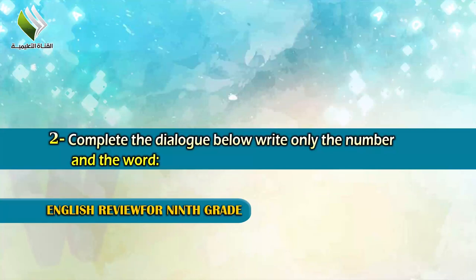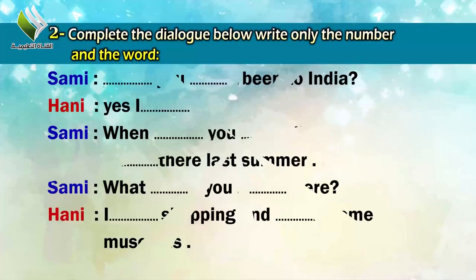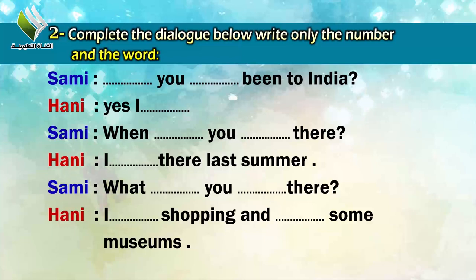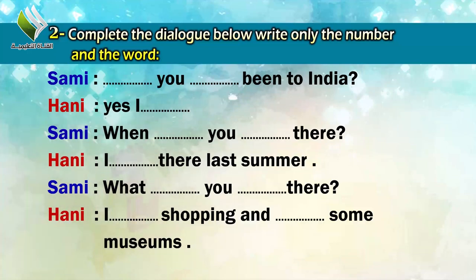Number five: 'The tea is too hot to drink.' Now the dialogue exercise. Samee asks Hani: 'Have you ever been to India?' Hani replies: 'Yes, I have.' Samee: 'When did you go there?' Hani: 'I went there last summer.' Samee: 'What did you do there?' Hani: 'I went shopping and visited some museums.'